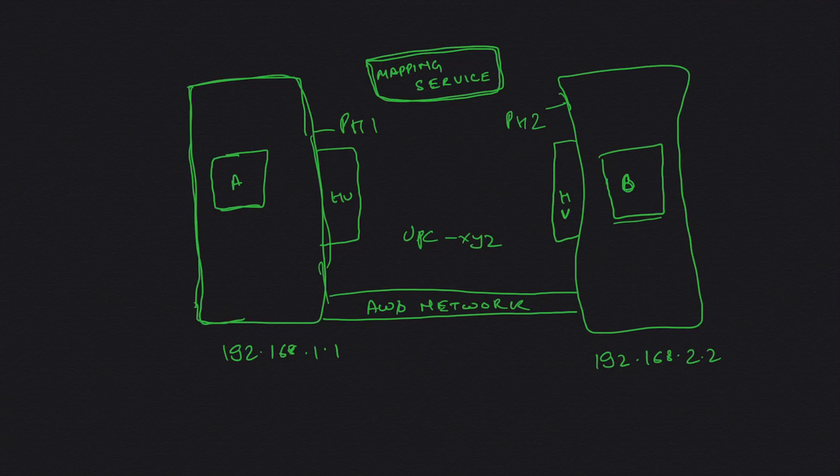It's actually a very complicated thing to describe, the mapping service, but once we start with how the data flows, then probably you will get an idea. When instance A wants to go to instance B, it currently doesn't know its MAC address, so it will send an ARP request which is captured by this hypervisor here.